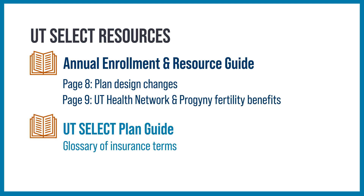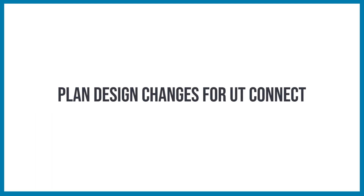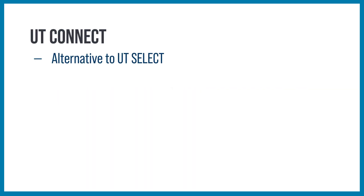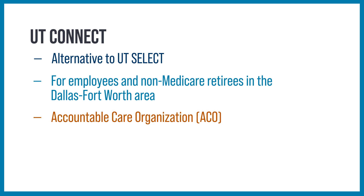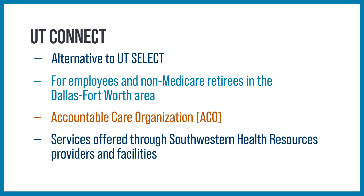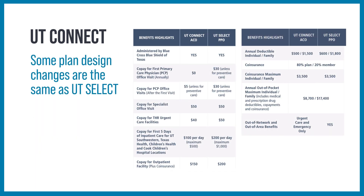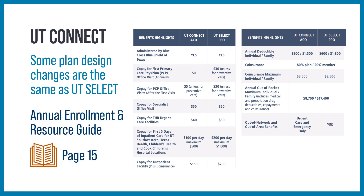A glossary of insurance terms is available in the UT Select plan guide. UT Connect is an alternative to UT Select for employees and non-Medicare retirees in the Dallas-Fort Worth area. It's an accountable care organization plan with services offered through Southwestern Health Resources providers and facilities. Plan design changes for UT Connect, some of which are the same as UT Select, are listed on page 15 of the Annual Enrollment and Resource Guide.